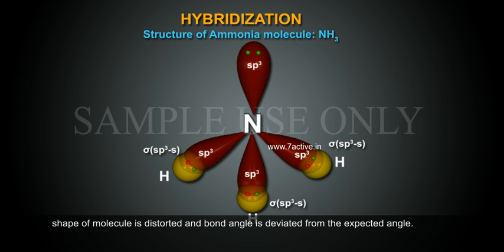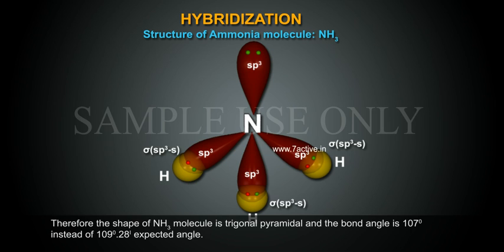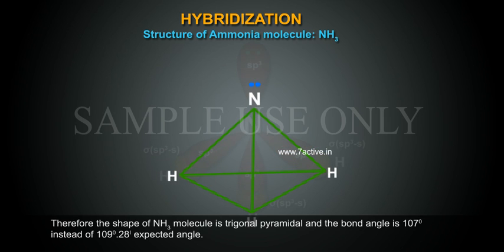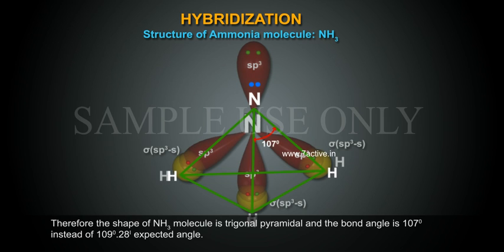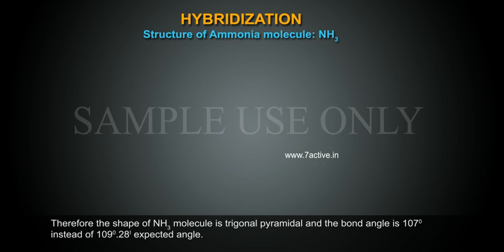Therefore, the shape of NH3 molecule is trigonal pyramidal and the bond angle is 107 degree instead of 109 degree 28 minute expected angle.